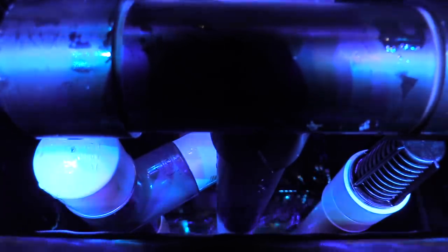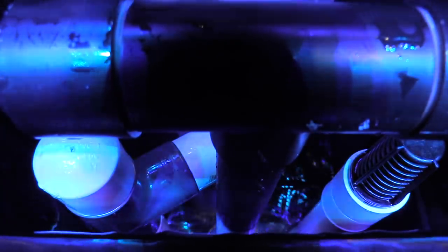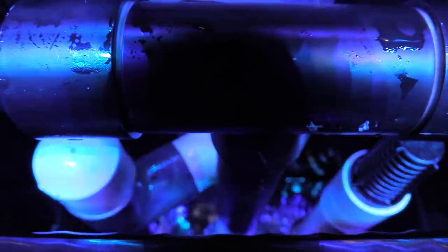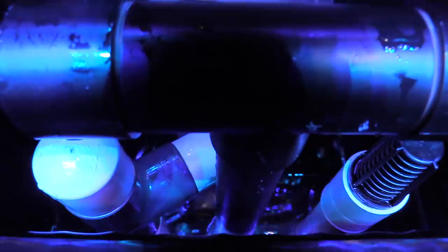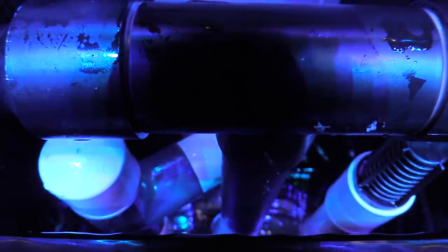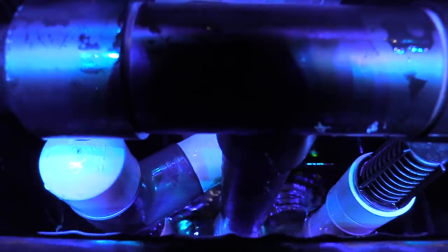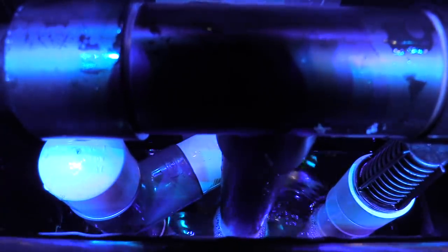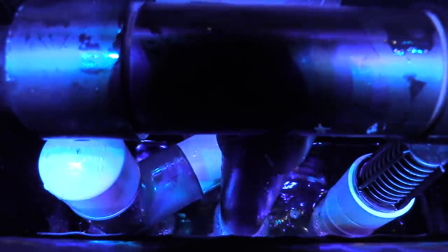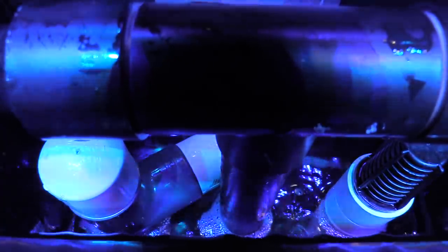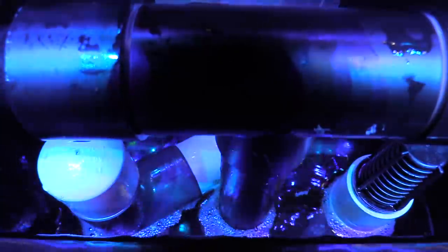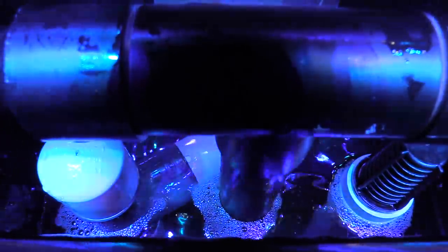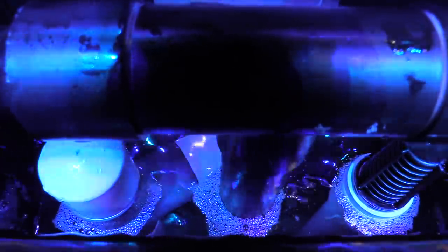The reason why I like to keep my return pump kind of slow is because it has more contact time in the sump. The more contact time you have in the sump, that means the more contact time your skimmer is actually going to have with the water. It's not just going to be rushing through and then hurrying up to get back to your main display. The more contact time you have, the longer your chaeto has on it, whatever macro algae, whatever bio brick that you have in your sump at the time.